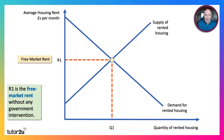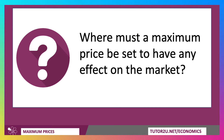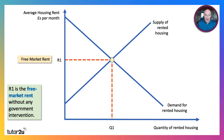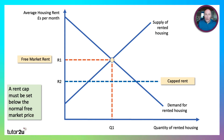Here's our diagram. Don't forget to contextualise the axes — the average housing rent on the y-axis and the quantity of rented housing on the x-axis. Left to its own devices, R1 would be the average free market rent without any government intervention. Where must a maximum price be set to have any impact on the market? It must be set below the normal free market price. So there is your capped rent — your price ceiling.